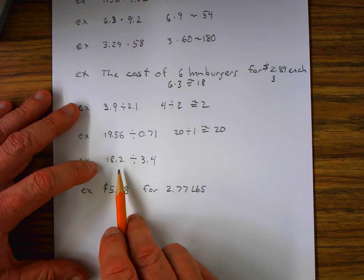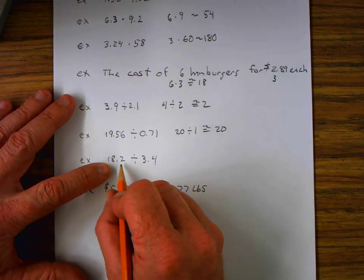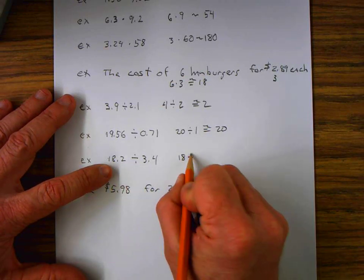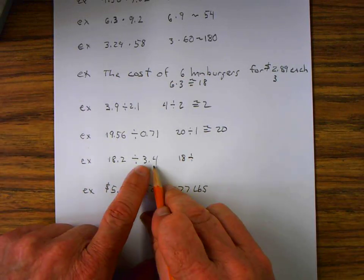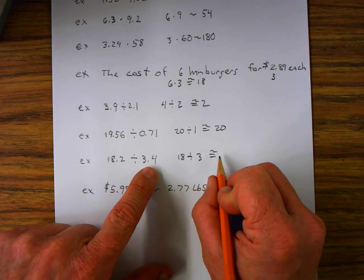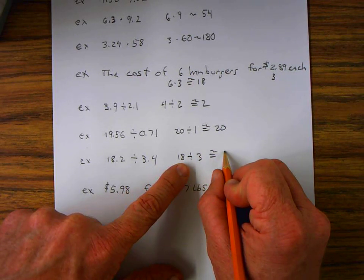18.2 divided by 3.4. This can be rounded to 18 because 2 is less than 5, divided by 3.4 can be rounded to 3. And our estimate is about 6. 18 divided by 3 is 6.